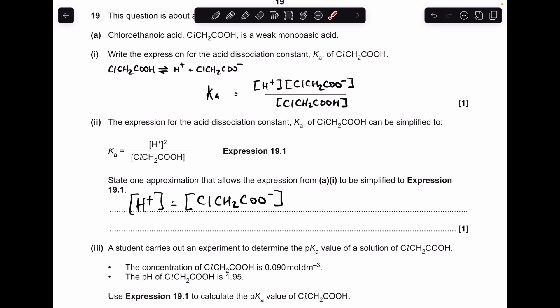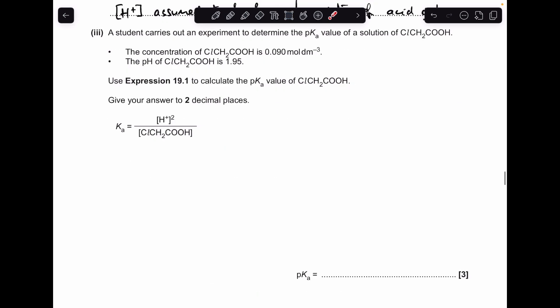And then the next part, we've got to calculate the pKa value of the weak acid. We're given the concentration of the acid at 0.09 moles per decimeter cubed and we've got a pH for the acid at 1.95.